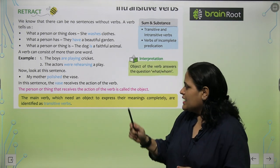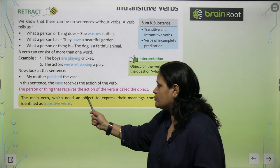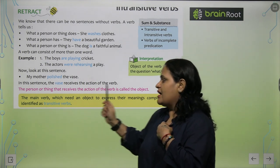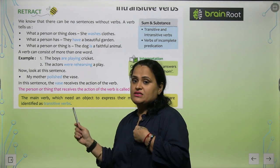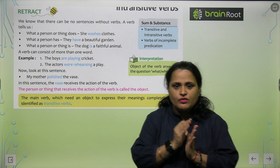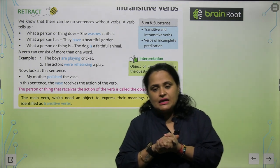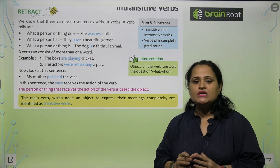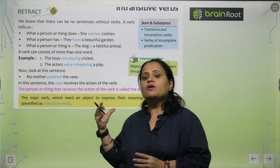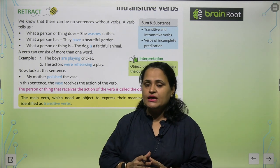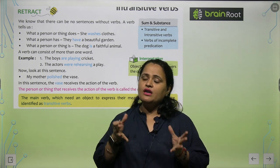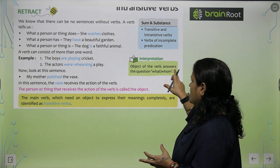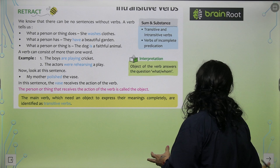The main verb which need an object to express their meanings completely are identified as transitive verbs. Jis verb ko apna meaning clear karne ke liye kisi object ki need hoti hai, usse hum kehte hai transitive verb, aur jisse nahi hoti hai usse kehte hai hum intransitive verb. Object of the verb answers the question what or whom.